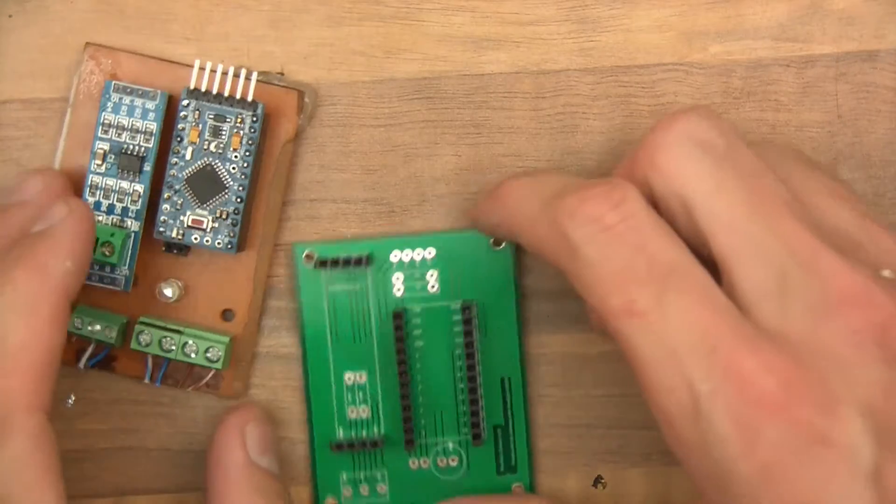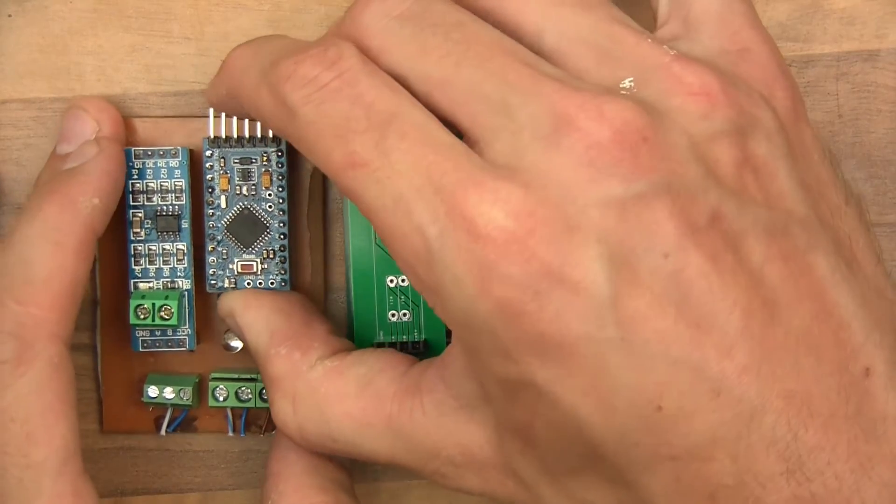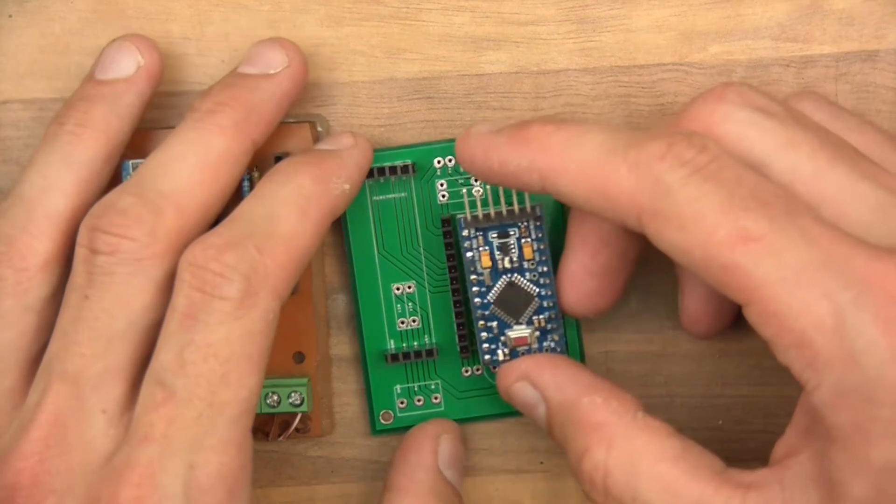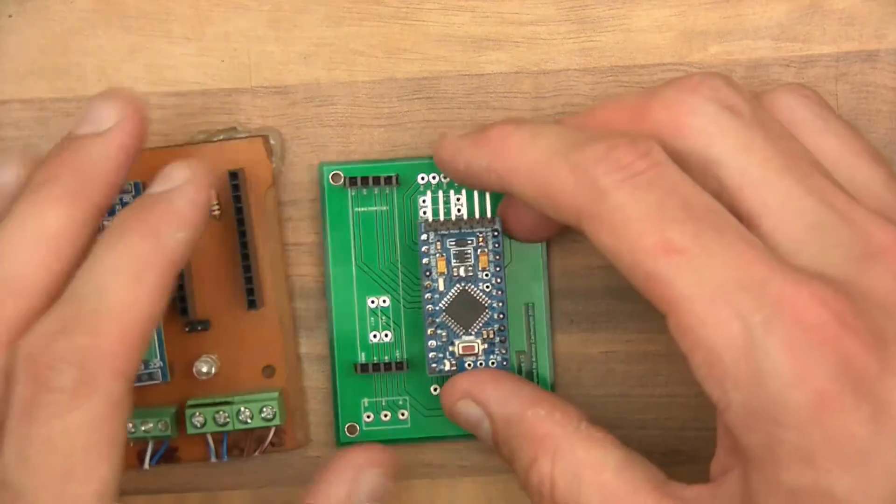So I might as well move these over, so TXD go there and yeah that's fine, so they can go in there. Oh no they can't actually because I need to put the resistors in place.